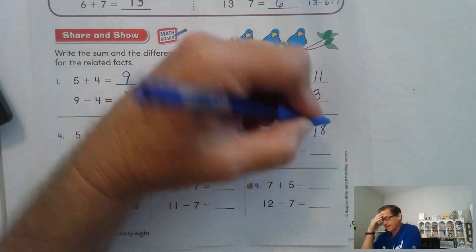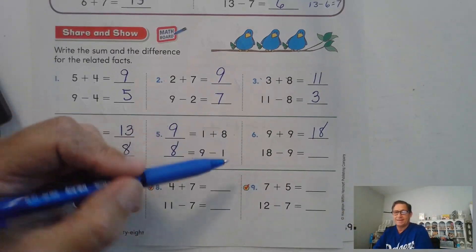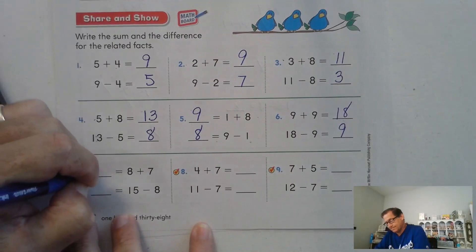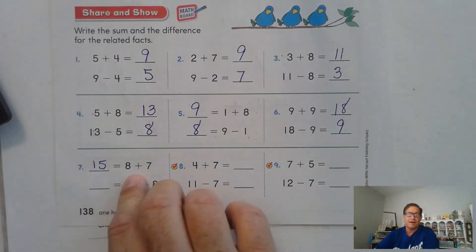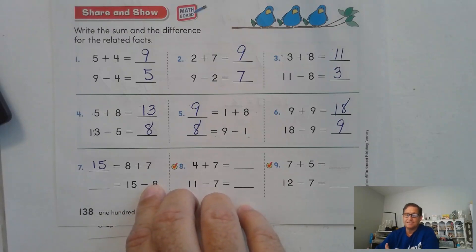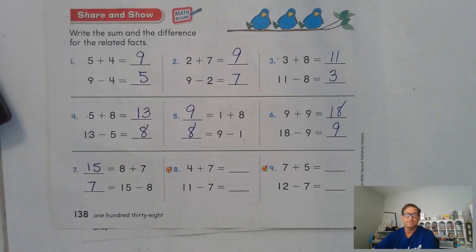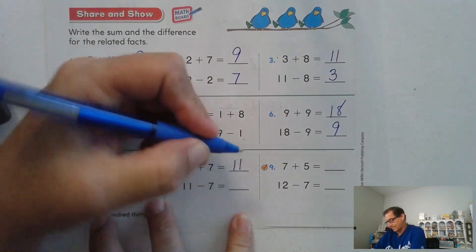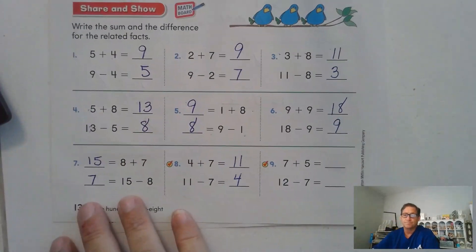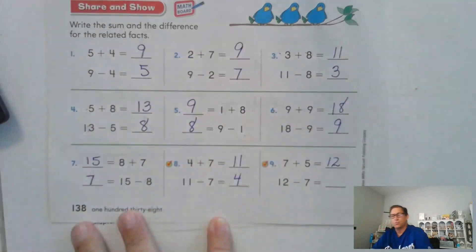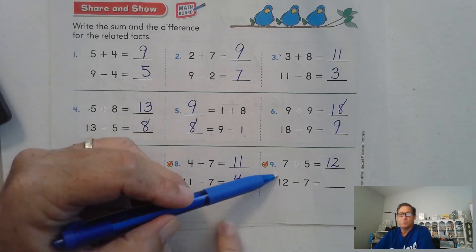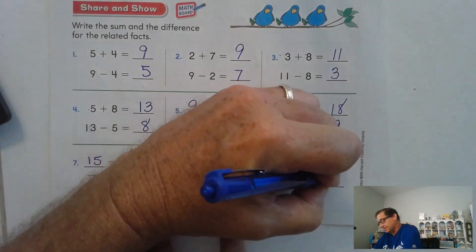Nine plus nine — that's a doubles fact — is 18. So 18 take away nine: nine plus what is 18? Nine. Eight plus seven is 15 — seven plus seven is 14, add one more is 15. So 15 take away eight: eight plus what is 15? Seven. Four plus seven is 11. So 11 minus seven: seven plus what is 11? Seven plus five is 12 — five plus five plus two: five plus five is 10, plus two more is 12. 12 minus seven: seven plus what is 12? Five.